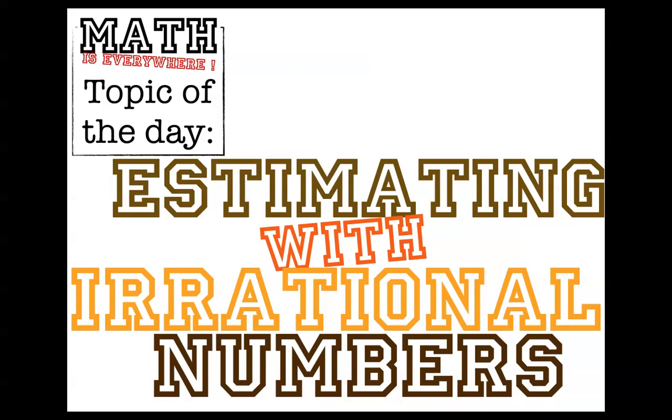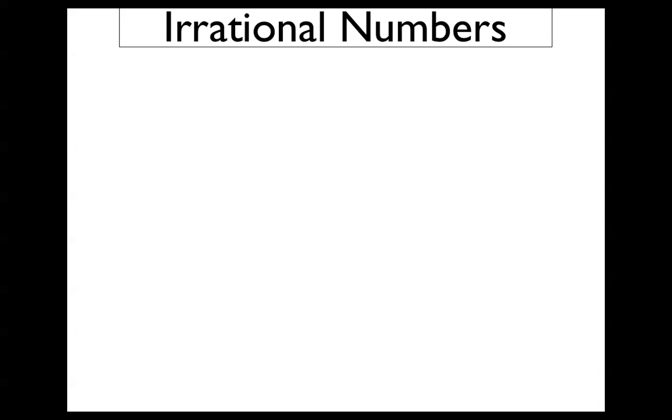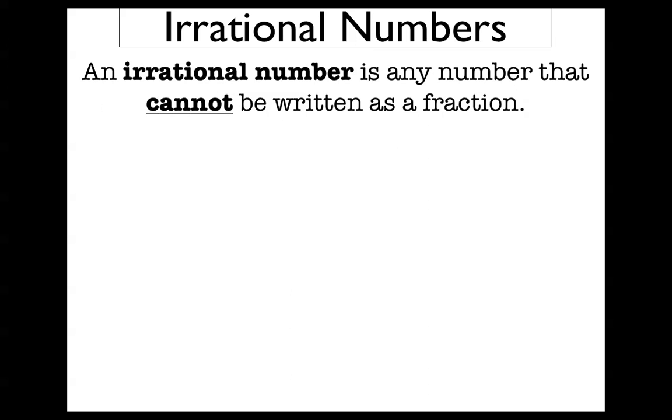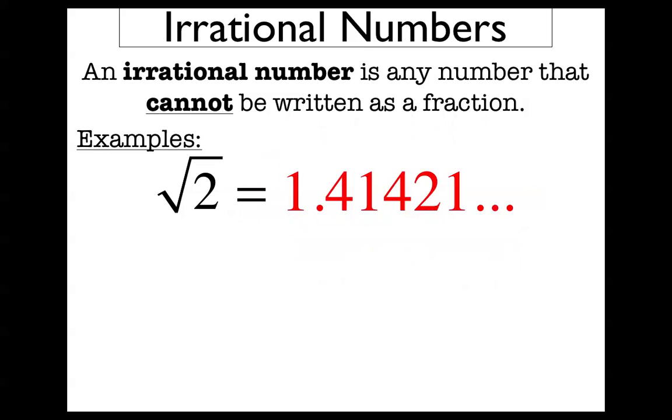Now that we know what an irrational number is and how it's different from a rational number, how do we actually find out what the value of an irrational number is? First, let's remember what an irrational number is. An irrational number is any number that cannot be written as a fraction. So, there are numbers like the square root of 2, which comes out to some crazy weird decimal. There's no way of knowing what that decimal is without a calculator.